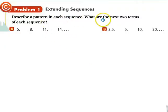Describe a pattern in each sequence. What are the next two terms? So what we see here is what's happening from one term to the next? Plus three. So that's the first part we describe it. What are the next two terms? 17 and 20.